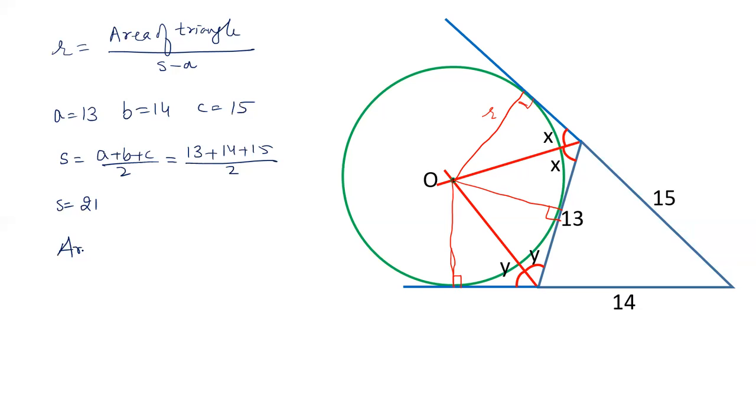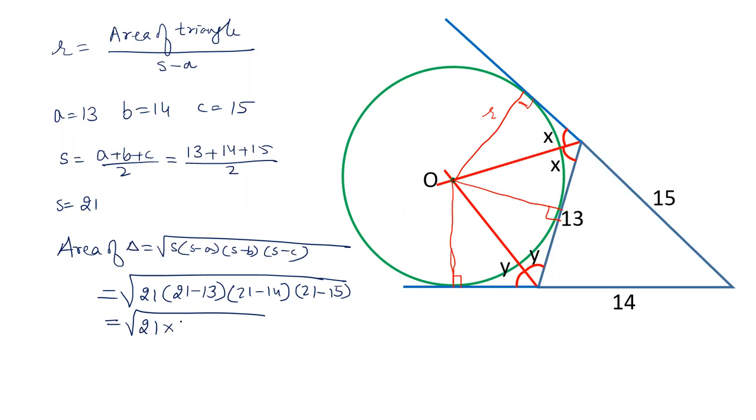Now area of triangle. Area of triangle is given by Heron's formula as square root of S times S minus A times S minus B times S minus C. The value of S is 21, value of A is 13, value of B is 14, value of C is 15. Subtract the values: 21 minus 13 is 8, 21 minus 14 is 7, 21 minus 15 is 6. 21 can be written as 3 into 7, 8 can be written as 2 into 2 into 2, 7 is a prime number and 6 can be written as 2 into 3. And now make the pairs.